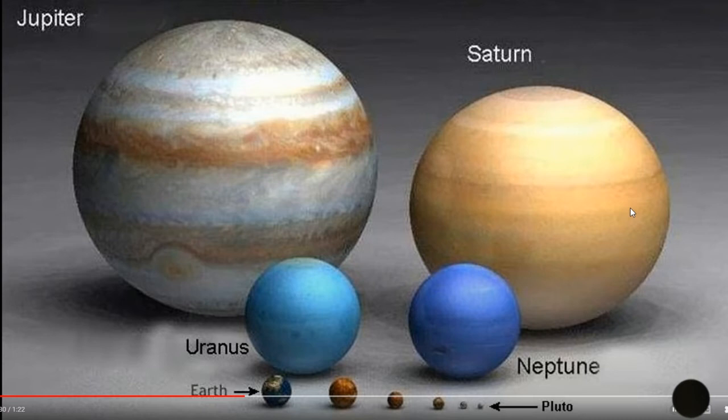As you can see in this picture, Jupiter is bigger than Saturn, Uranus, and Neptune. And I see little Pluto over there.